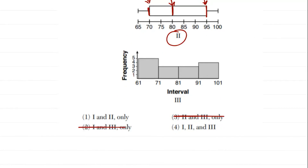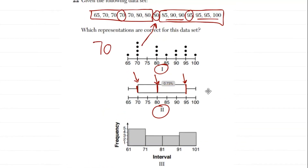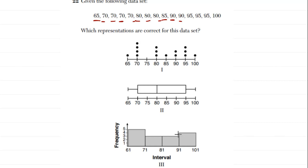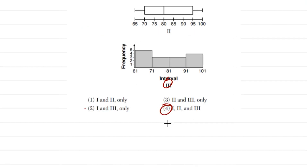For the histogram: it says five data points are between 61 and 71 — counting gives 1, 2, 3, 4, 5. True. Three points between 71 and 81 — 1, 2, 3. True. Three points between 81 and 91 — 1, 2, 3. True. And four points between 91 and 101 — 1, 2, 3, 4. True. So numeral three is also correct, meaning all representations are accurate and the answer is choice four.